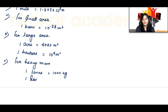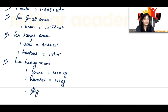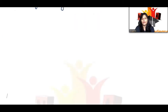Second, you can take 1 quintal, which is equal to 100 kg. After that, 1 slug is equal to 14.57 kg, and 1 pound is equal to 0.4536 kg.